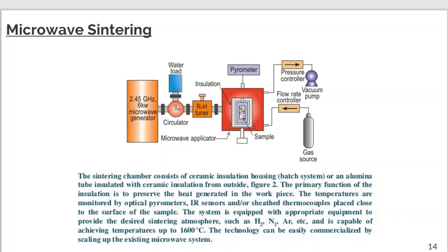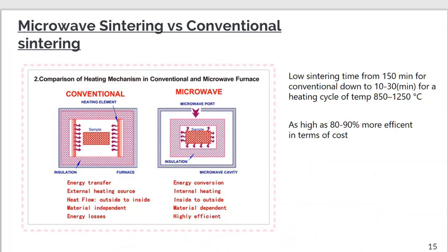In microwave sintering versus conventional sintering, the basic difference is processing cost. Microwave sintering has significantly lower processing cost. Heat is generated throughout the material. In conventional heating, the surface of the workpiece must first be heated by convection and radiation, then the interior is heated by thermal conduction. This requires extra energy and cost and leads to energy loss, which is avoided in microwave sintering. That's why it is 80 to 90 percent more efficient in terms of cost.